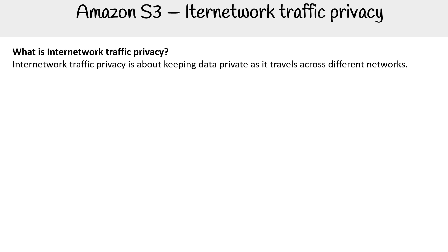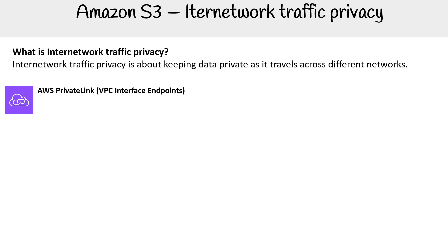There are two ways that we can have internetwork traffic privacy when talking about S3. The first is AWS PrivateLink, also known as VPC interface endpoints. We do talk about these in our networking section in more detail, but this is a reminder of what these things do.